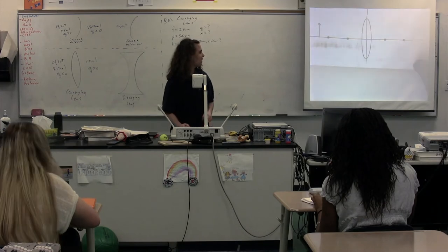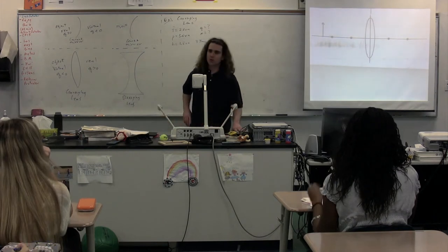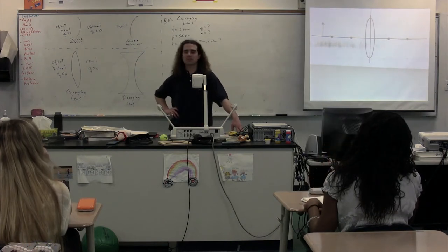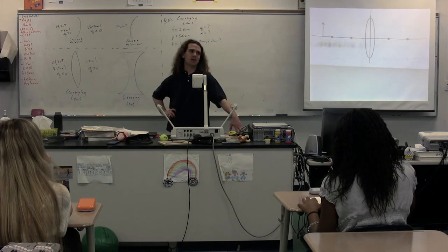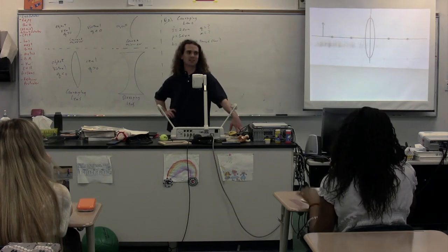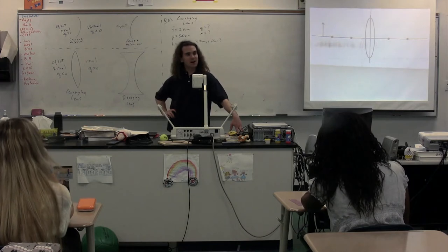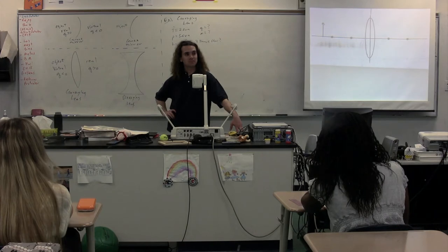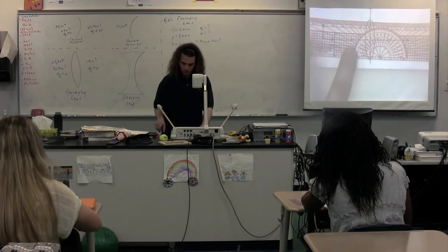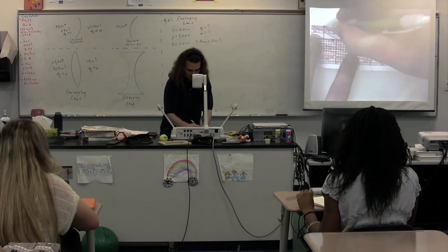Now we have our three rays. Two of them are almost identical to what we did before, and one of them is just a hair different. We'll start with the parallel ray. The incident ray of the parallel ray goes parallel to the principal axis — it's the same. We draw the incident ray of the parallel ray going towards the lens, parallel to the principal axis.